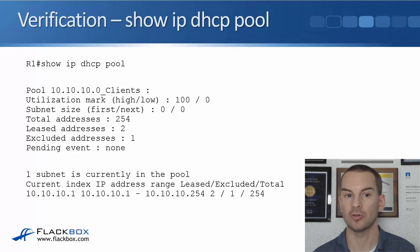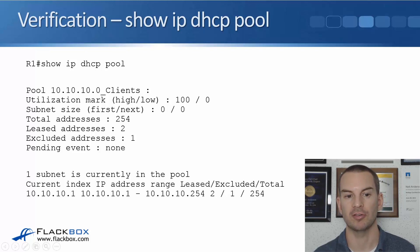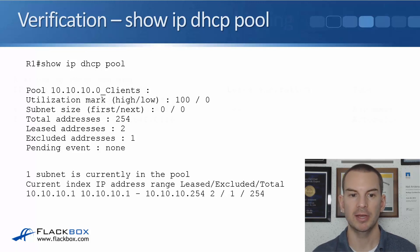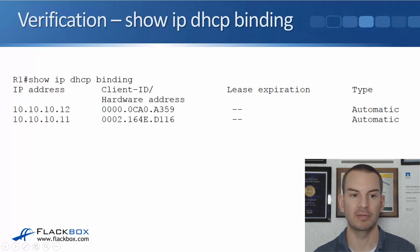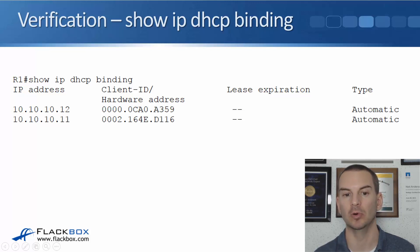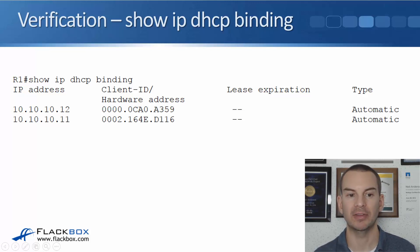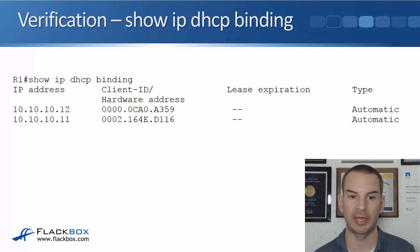To verify the configuration, we can use show ip dhcp pool. In our example, you can see that leased addresses is two, so we have given out two addresses in this range. To see the addresses that were given out and who they were given to, we use show ip dhcp binding. Here I can see that 10.10.10.11 was given out to the client with MAC address ending D116, and 10.10.10.12 was given out to the client with MAC address ending A359. You can see it started giving out addresses at .11 because we had excluded .1 to .10.